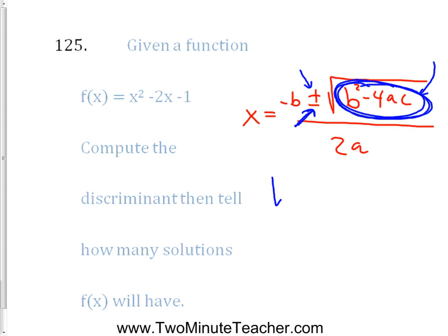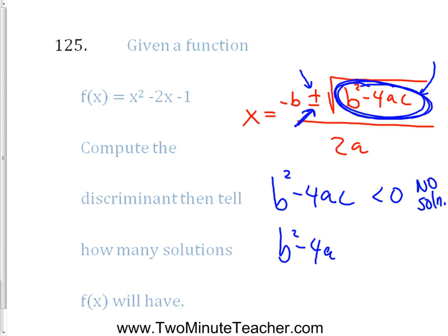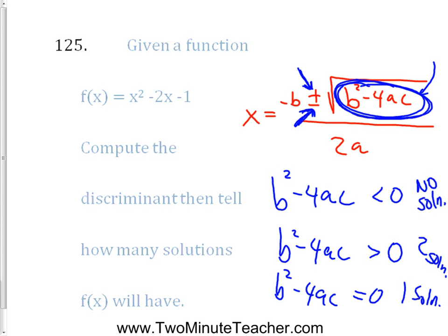If b² − 4ac is negative (less than zero), there are no real solutions, because you'd have a negative under the square root. If it's positive (greater than zero), you'll have two solutions — adding and subtracting give two different answers. If b² − 4ac equals zero, you only have one solution, because adding or subtracting zero gives the same result.